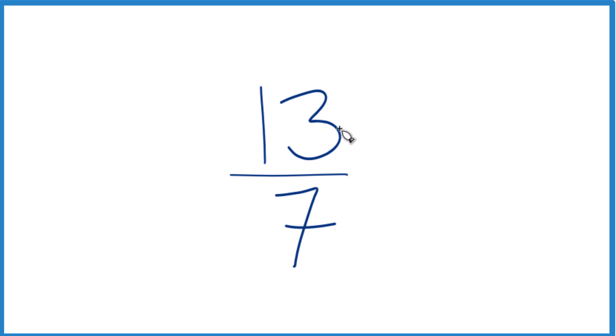But it is an improper fraction. That's because the numerator, 13, is larger than the denominator, 7. So we could write it as a mixed number. To do that, we see how many times does 7 go into 13?